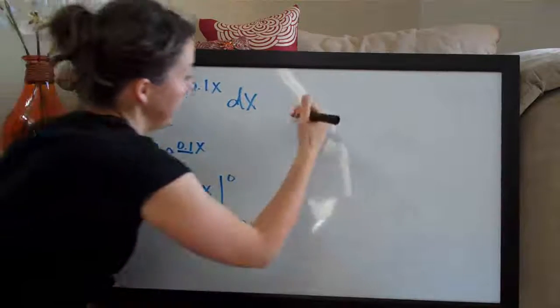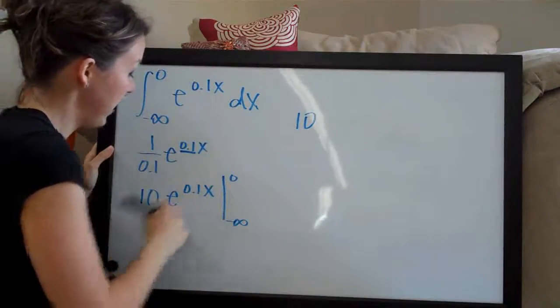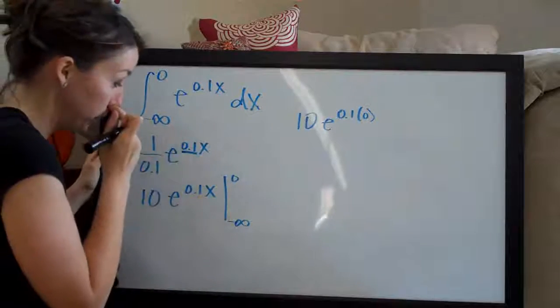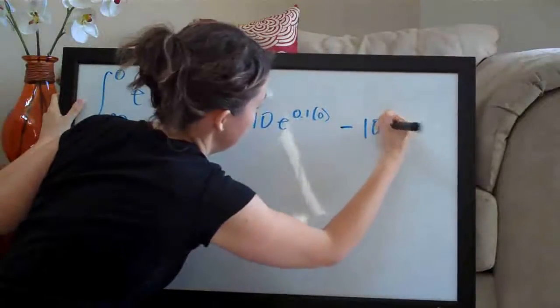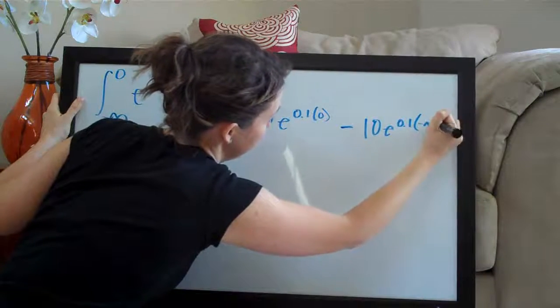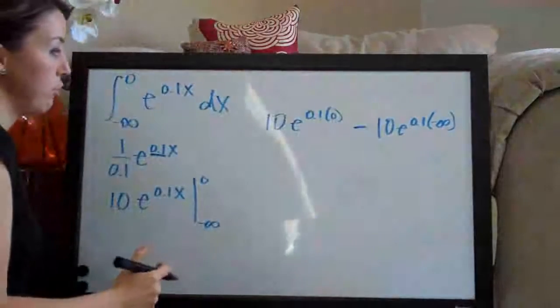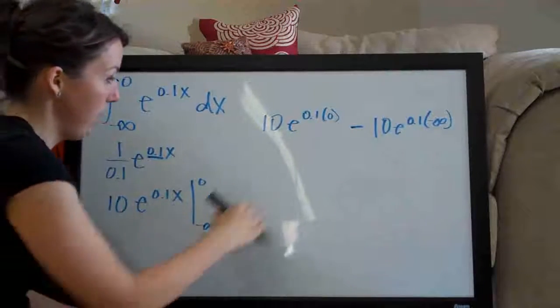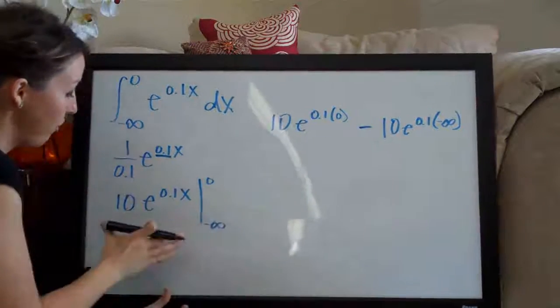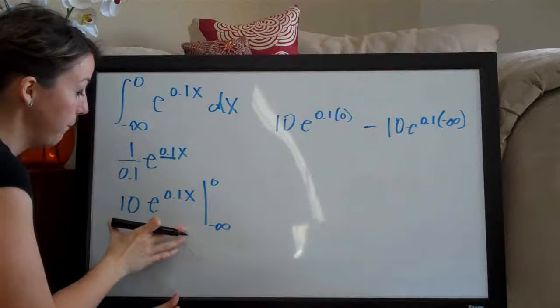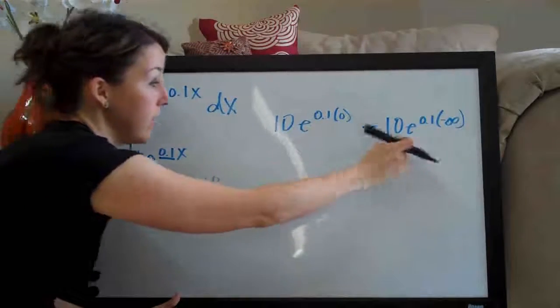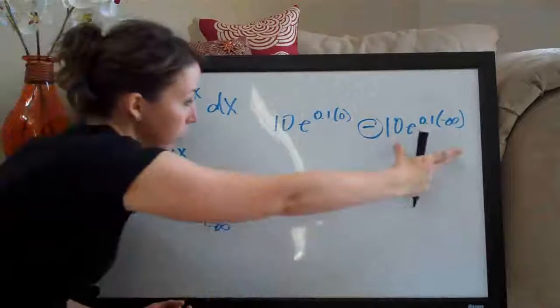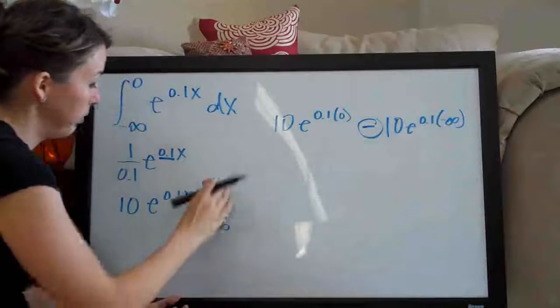So it's going to look like this. I'm just going to put zero in first. So 10e to the 0.1 times zero. We're plugging zero in for x here. So we plug that in and then minus, and the same thing again, 10e to the 0.1 times negative infinity. So you always plug the top in first and the bottom in second. So zero goes in first and then negative infinity in second since this is the top and the bottom. And you plug it into everything that's on this side of the line. And this in the center is always minus. You always subtract this from this. So those are the components to plugging in this range.